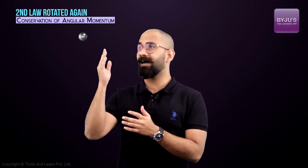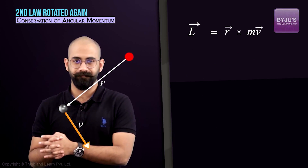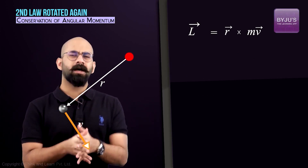To answer this, we need to revisit the definition of angular momentum. Let's say I have a point object moving with some velocity. I want to calculate the angular momentum of this point mass with respect to a reference point. I draw a vector r from that point to the mass, and the angular momentum L is equal to r cross mv.